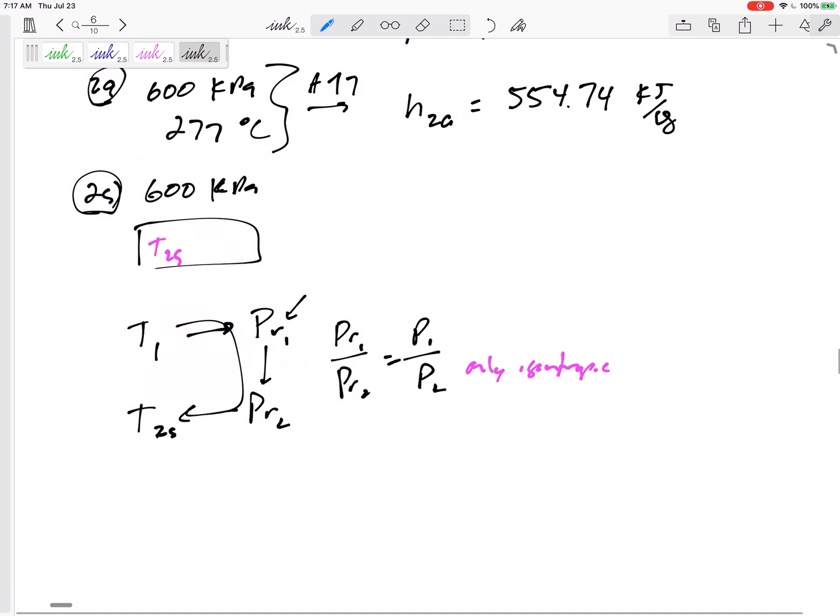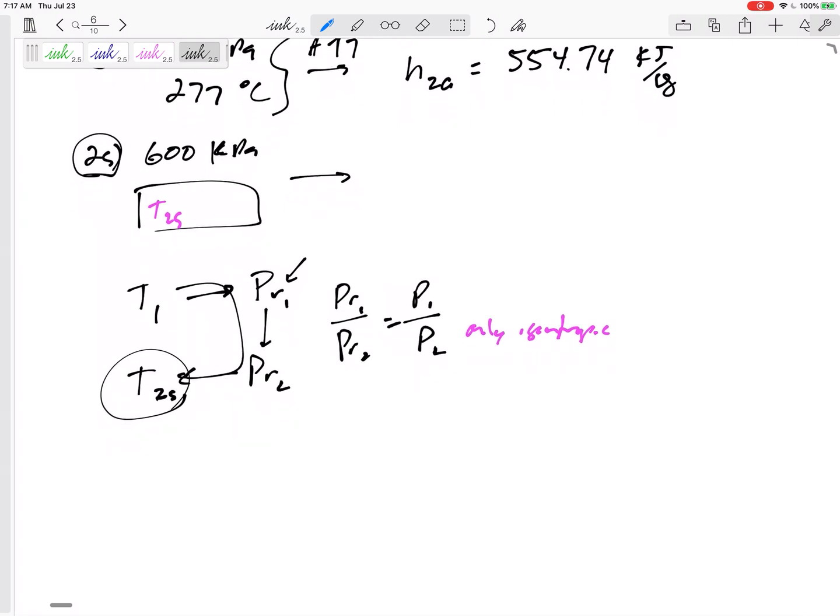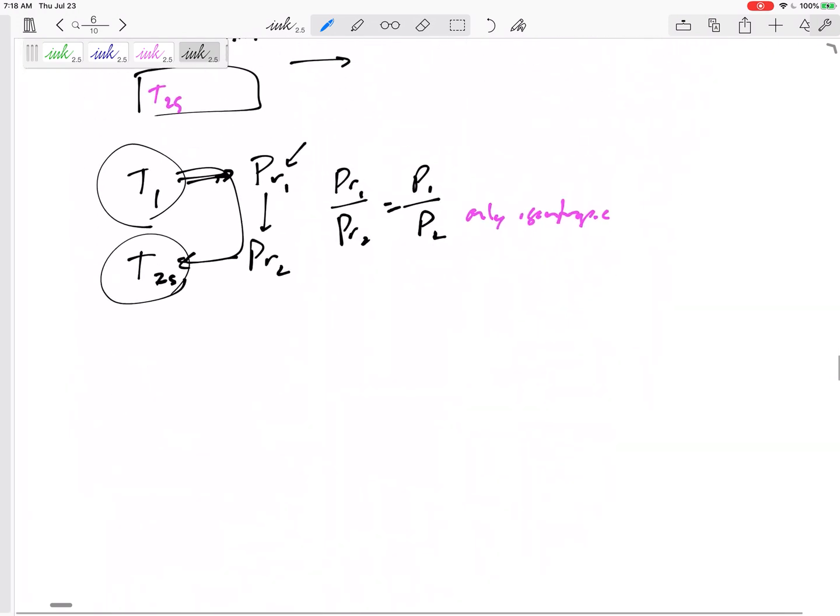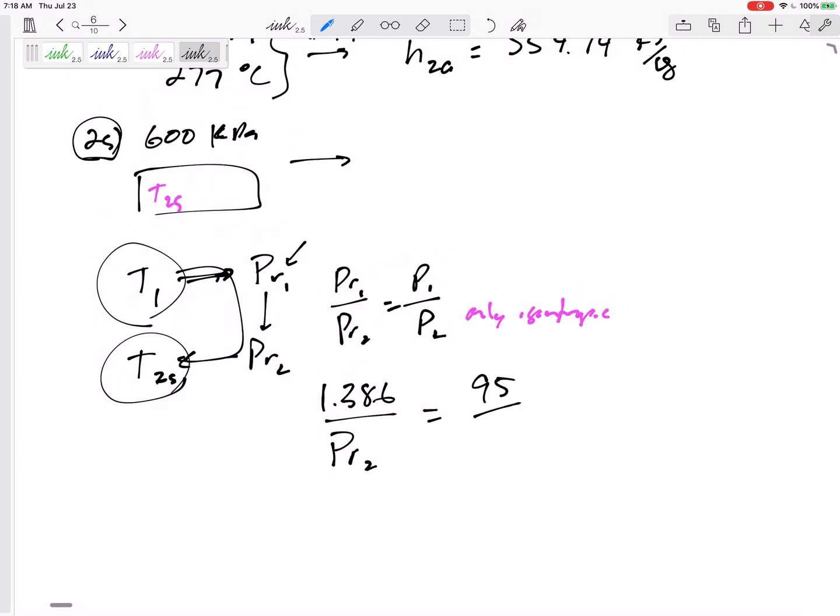Okay, so now I'm going to use this to get T2S so that I can go to the table to get H2S, right? Okay, for the initial temperature, my PR1 was 1.386. So 1.386 over PR2 equals P1 to P2, 95 to 600. PR2, 8.754.